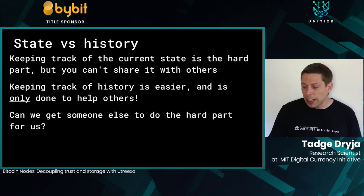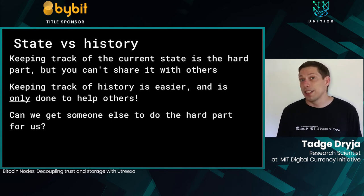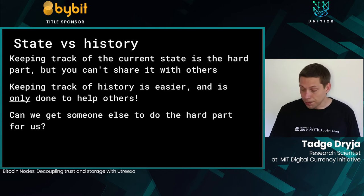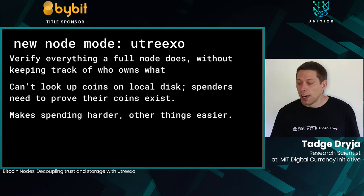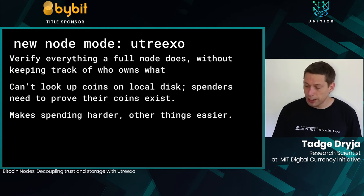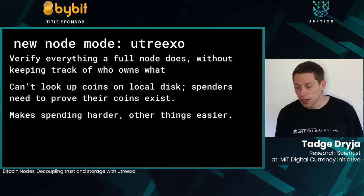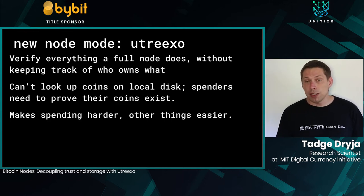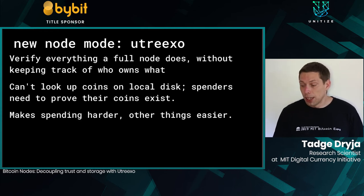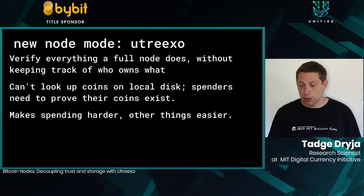Can you get someone else to do the hard part? Can we throw away the history? Pruned nodes have been common for many years — you play through the history and then delete it. Can we do the same thing with the state? The answer is yes. There's a new node type called UTXO — I'd call it a full node because it fully verifies, but it does not contain the full state of the system.